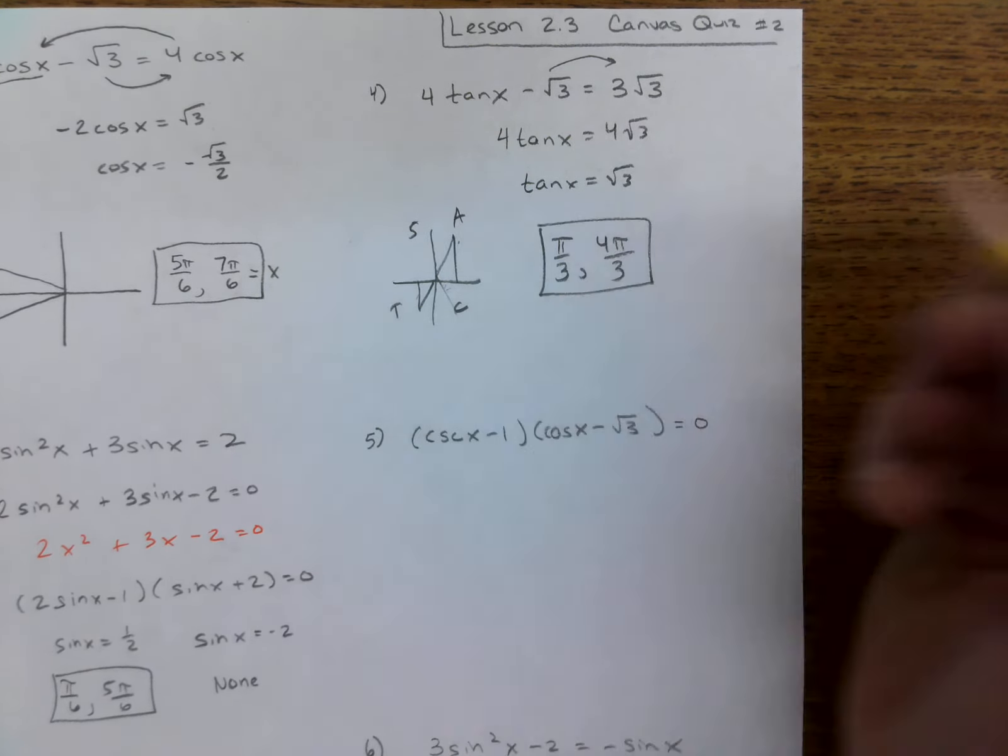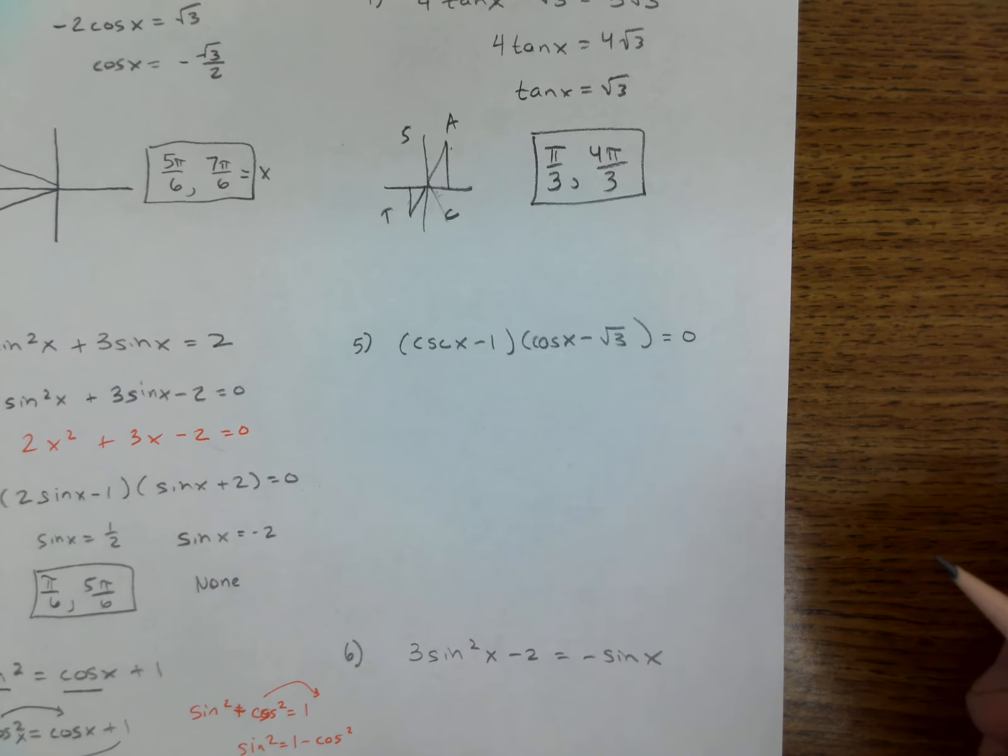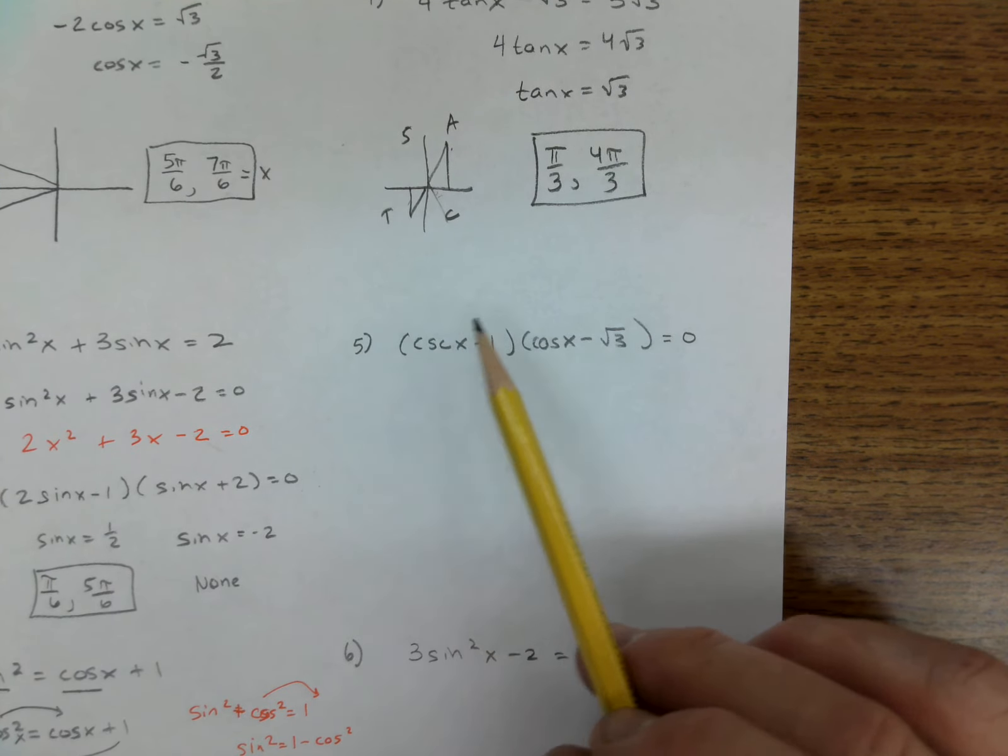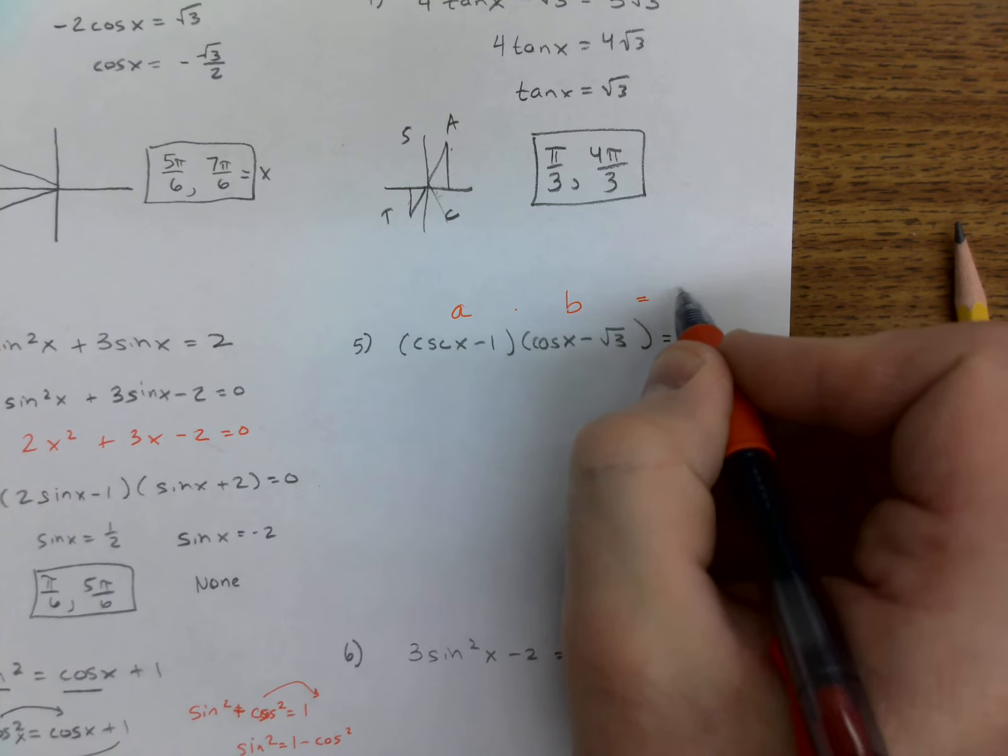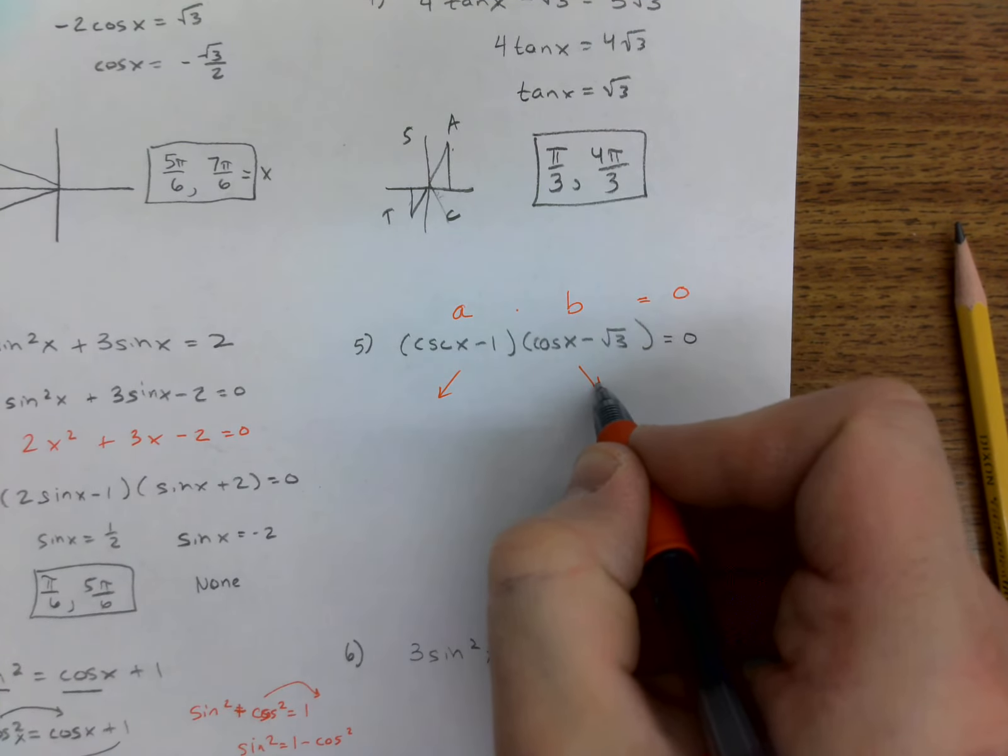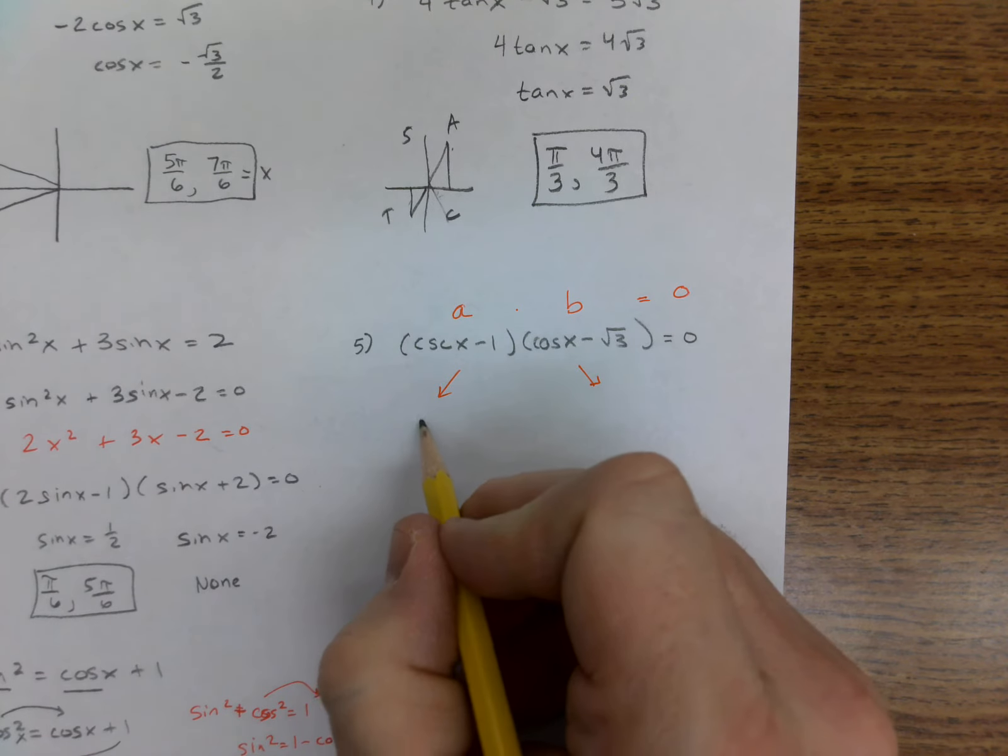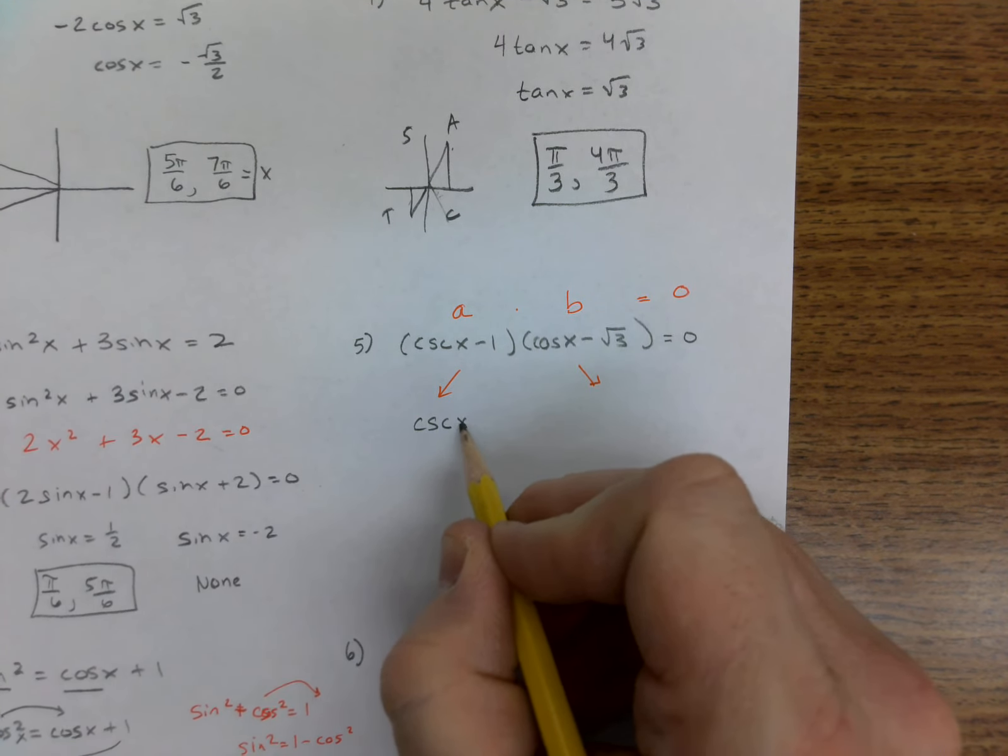All right, number five kind of looks like a mess, but wait a minute, it's already set up into a times b is zero. So set both of them equal to zero and solve. Cosecant of x is 1.